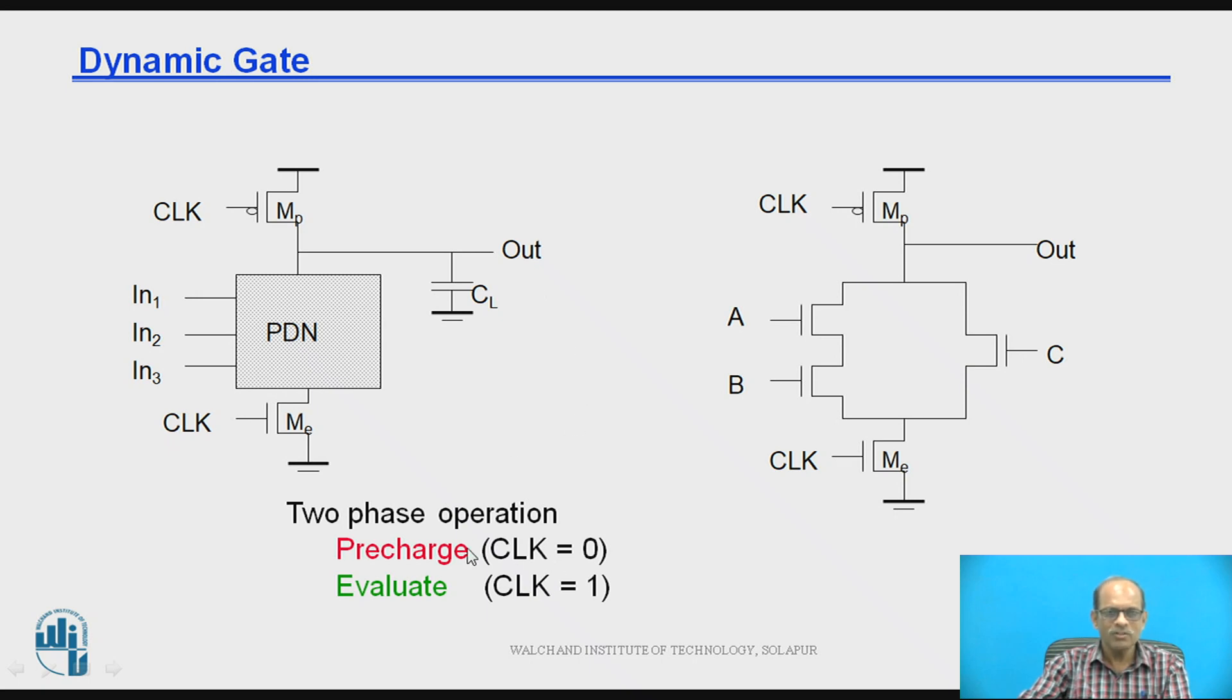Now when clock is 0, the pre-charge phase will take place and when clock is 1, the evaluation phase will take place. So here one pull-down network is considered, where these two NMOS are in series and for that connection, this NMOS comes in parallel with that. Now let us see how this circuit works.